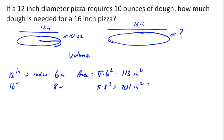Now, again, notice that if both pizzas were, let's say, 1 inch thick, which is pretty thick for a pizza, that the volume then would be the area of the top times the thickness would be 113 cubic inches, or 201 cubic inches in this case.